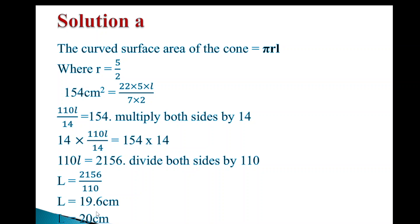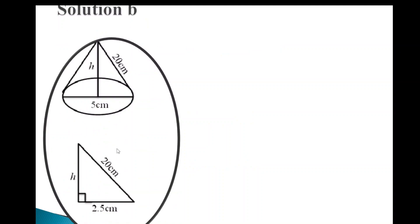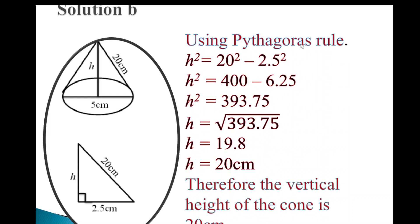Solution B: We have the diameter (so radius = 2.5 cm) and the slant height (≈ 20 cm), and we need the vertical height H. Using Pythagoras' theorem: H² = L² − r² = 20² − 2.5² = 400 − 6.25 = 393.75. Taking the square root of both sides gives approximately 19.84, which is approximately 20 centimeters. Therefore, the vertical height of the cone is approximately 20 centimeters.